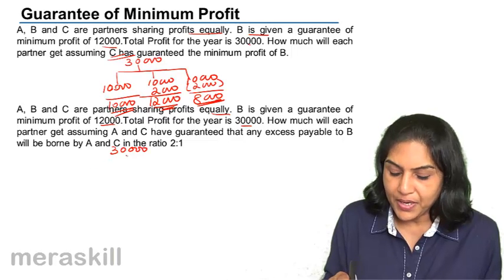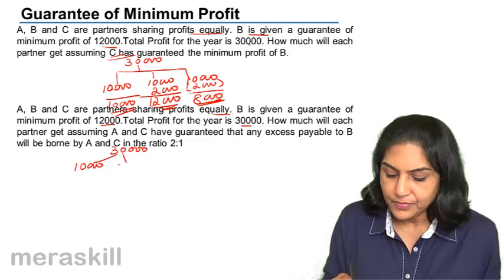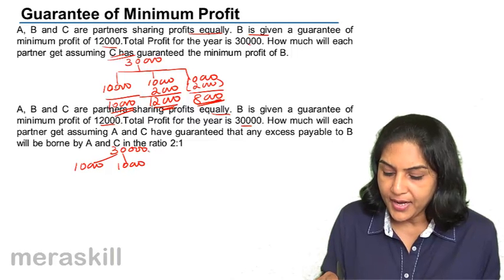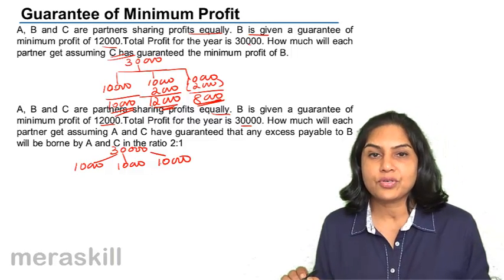30,000 equal partners should be 10,000 to A, 10,000 to B and 10,000 to C.